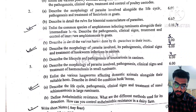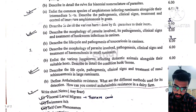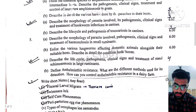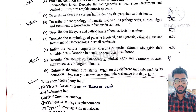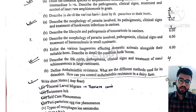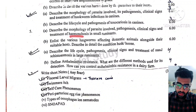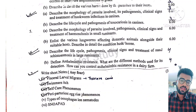Next question: parasite involved in pathogenesis, clinical signs and treatment of hookworm infection in canines. Then, pathogenesis of toxocariosis in canines — toxocariosis is a very important parasite. Ascaris is also quite important, so prepare both properly. Then, describe the morphology of the parasite involved in haemonchosis. These are all long-question-based parasites.